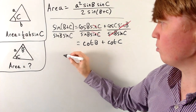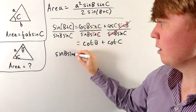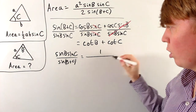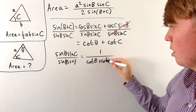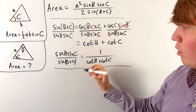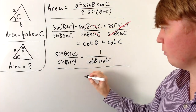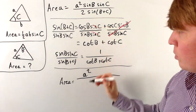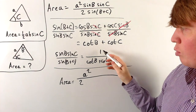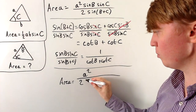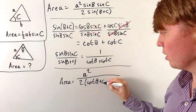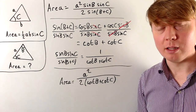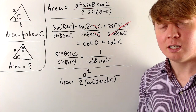What we really need is the reciprocal of this, so sine B sine C over sine(B plus C) equals 1 over (cot B plus cot C). Substituting this into our area formula, the numerator is just a squared, and the denominator keeps the 2, with all the trig terms becoming 1 over (cot B plus cot C). So the area equals a squared divided by 2(cot B plus cot C), which is an even more elegant expression for the area when we know the two angles enclosing the one side.